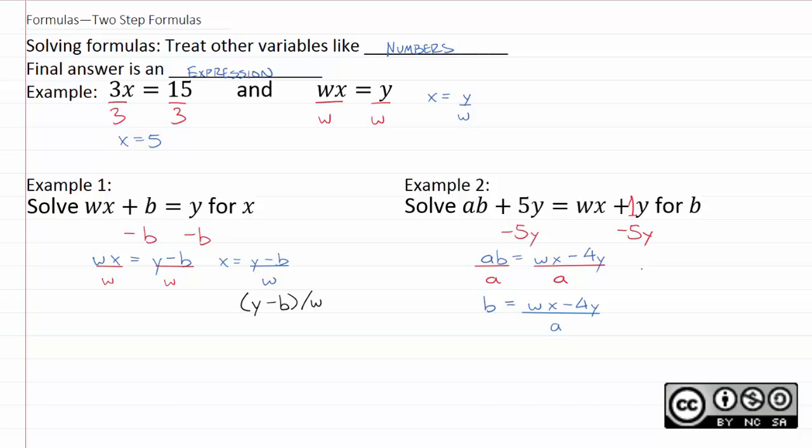And example 2 would come out to wx minus 4y over a. Give this a shot and try not to fear them too much, they do get easier. So, get a little practice and you'll see.